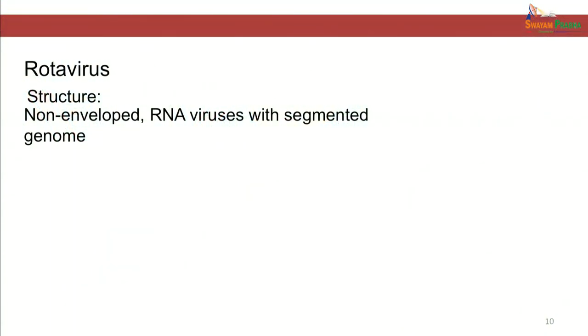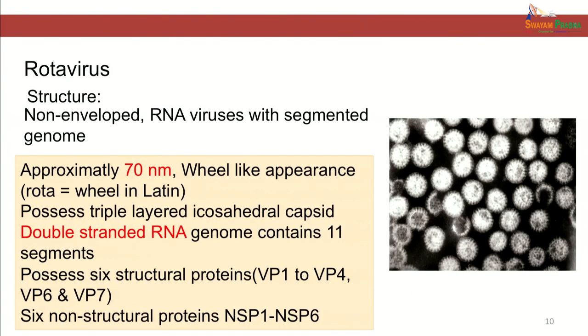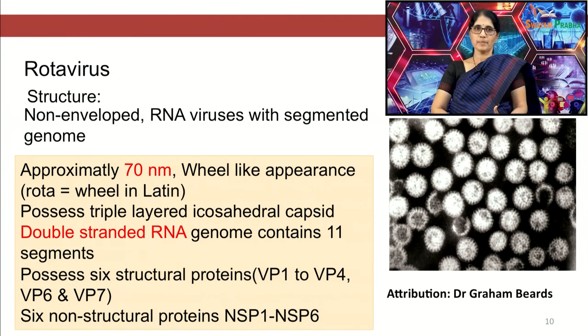Rotavirus is the most important cause of acute dehydrating diarrhea in children. The virus belongs to the Reoviridae family. It is a non-enveloped RNA virus with a segmented genome. It has icosahedral symmetry and is approximately 70 nanometers in size. It has a wheel-like appearance — in Latin, rota means wheel — and because of this wheel-like appearance, this virus is known as rotavirus. It possesses a triple-layered icosahedral capsid.